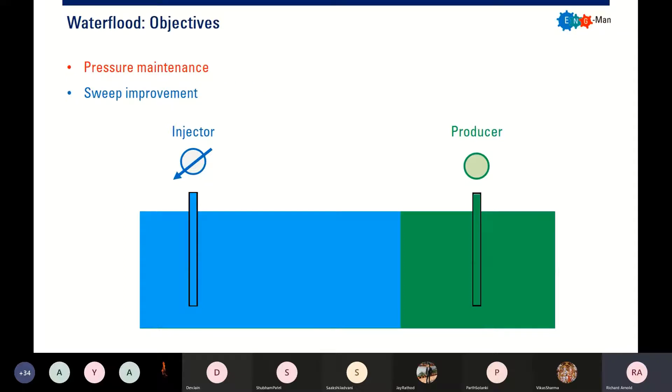The main objectives are at least these two factors: to provide pressure maintenance, to increase and keep our reservoir pressure, and also to improve the sweep. These two things will result in oil recovery enhancement. The most important things are pressure maintenance and sweep improvement to obtain enhanced oil recovery.